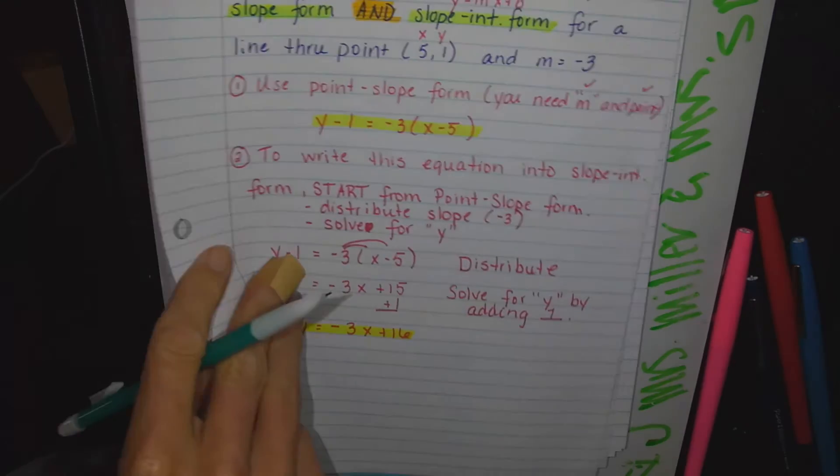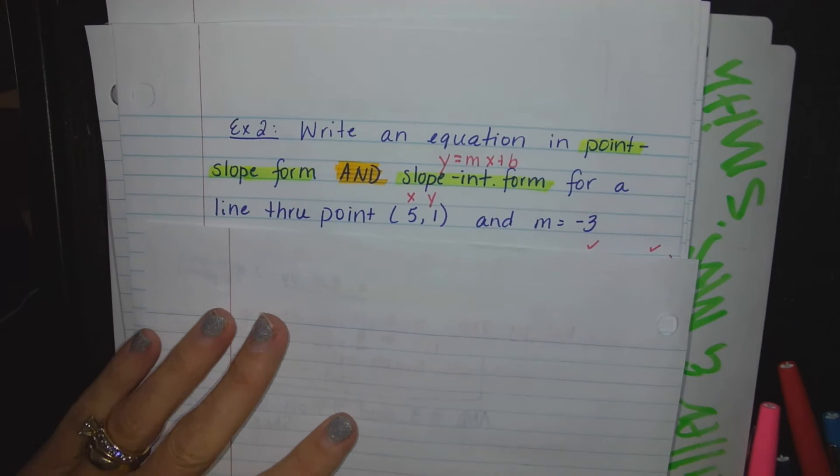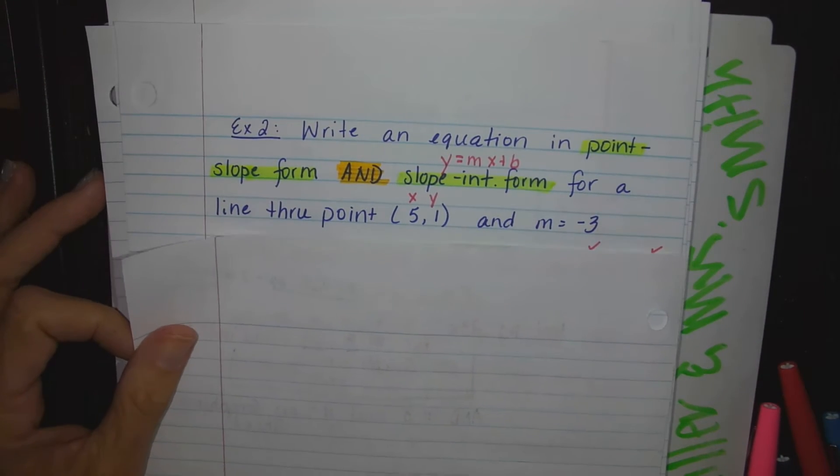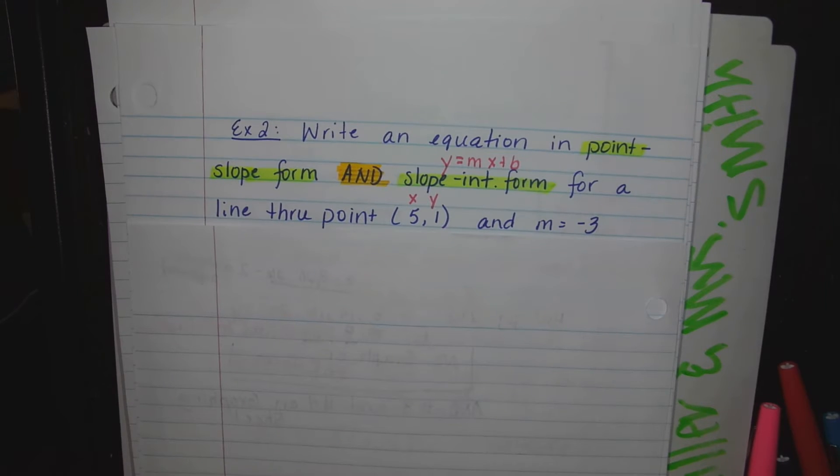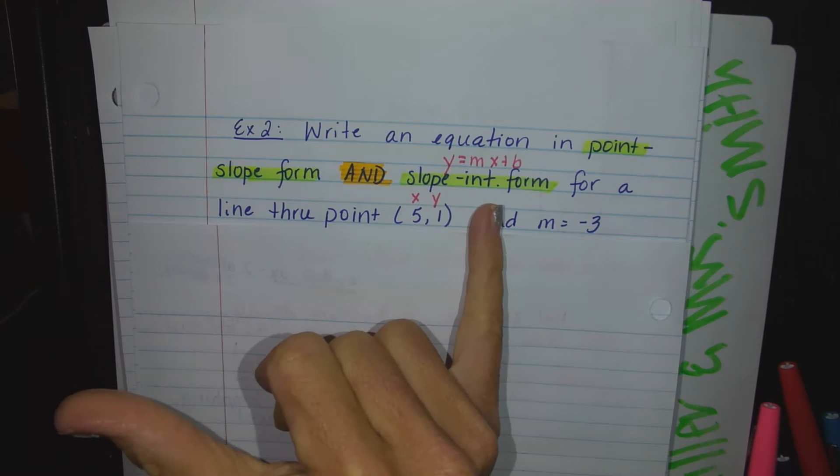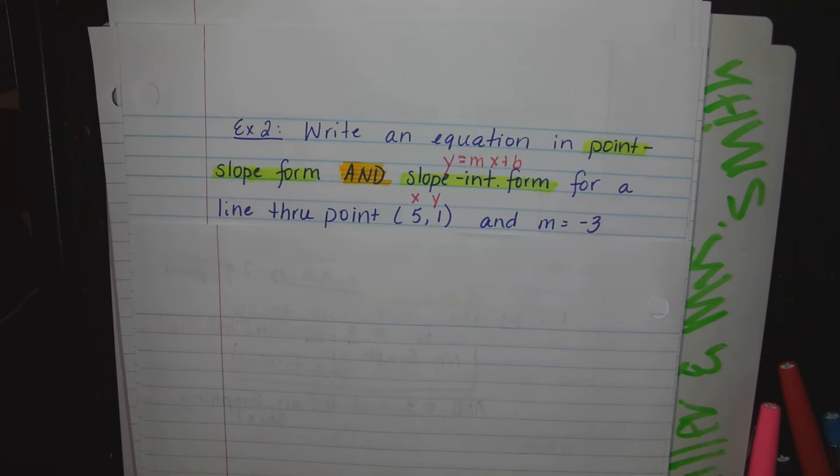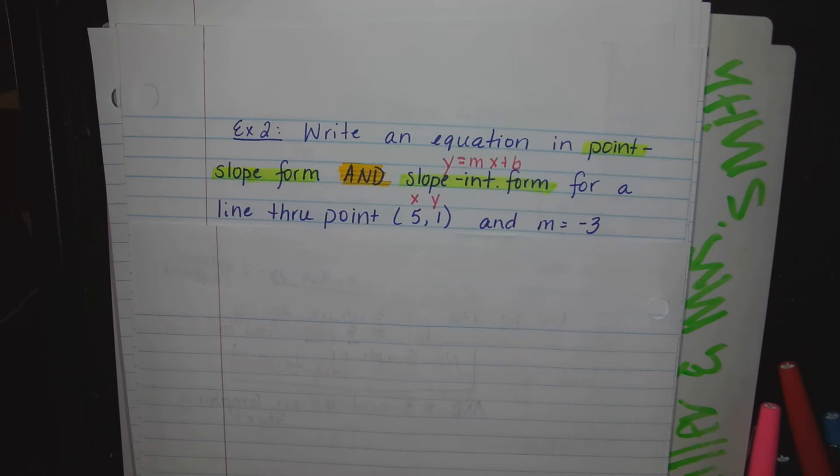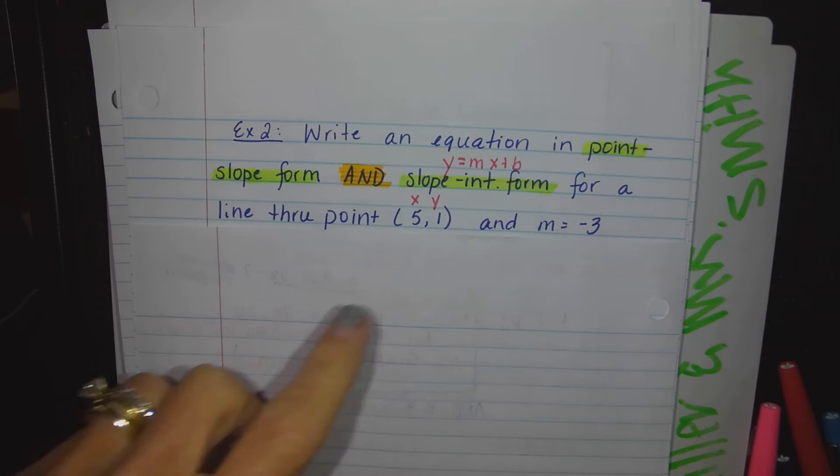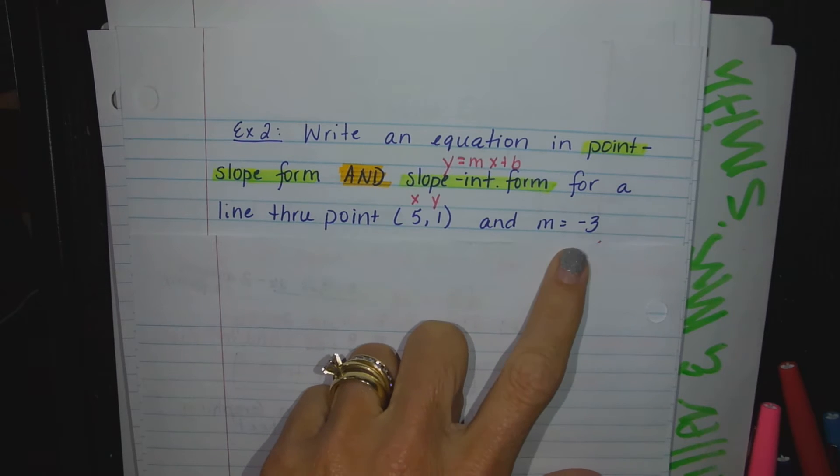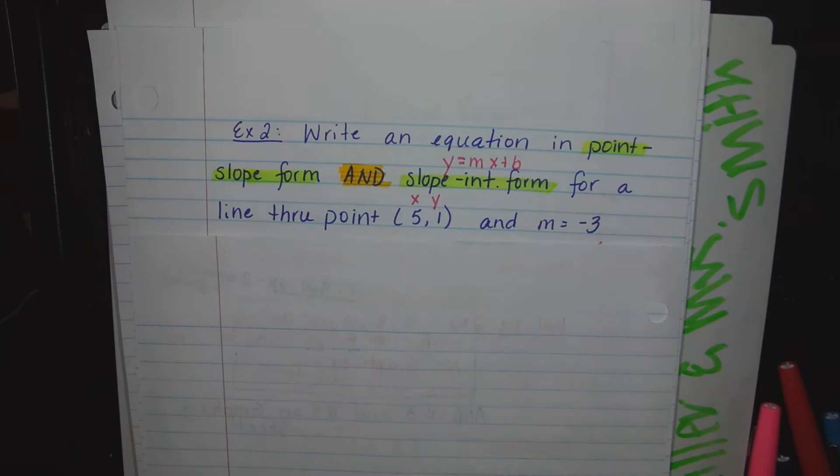Okay, one more example and then I am done for now. Example two: writing an equation in point-slope form and, what's the next word highlighted in orange? Slope-intercept. Well, you know what that is - we've talked about that for about three weeks now. So you have two answers for this one problem: point-slope, and then you're going to take that and put it into slope-intercept. You're going to be pleasantly surprised - it's not hard. For a line through point (5, 1) with a slope of negative three.